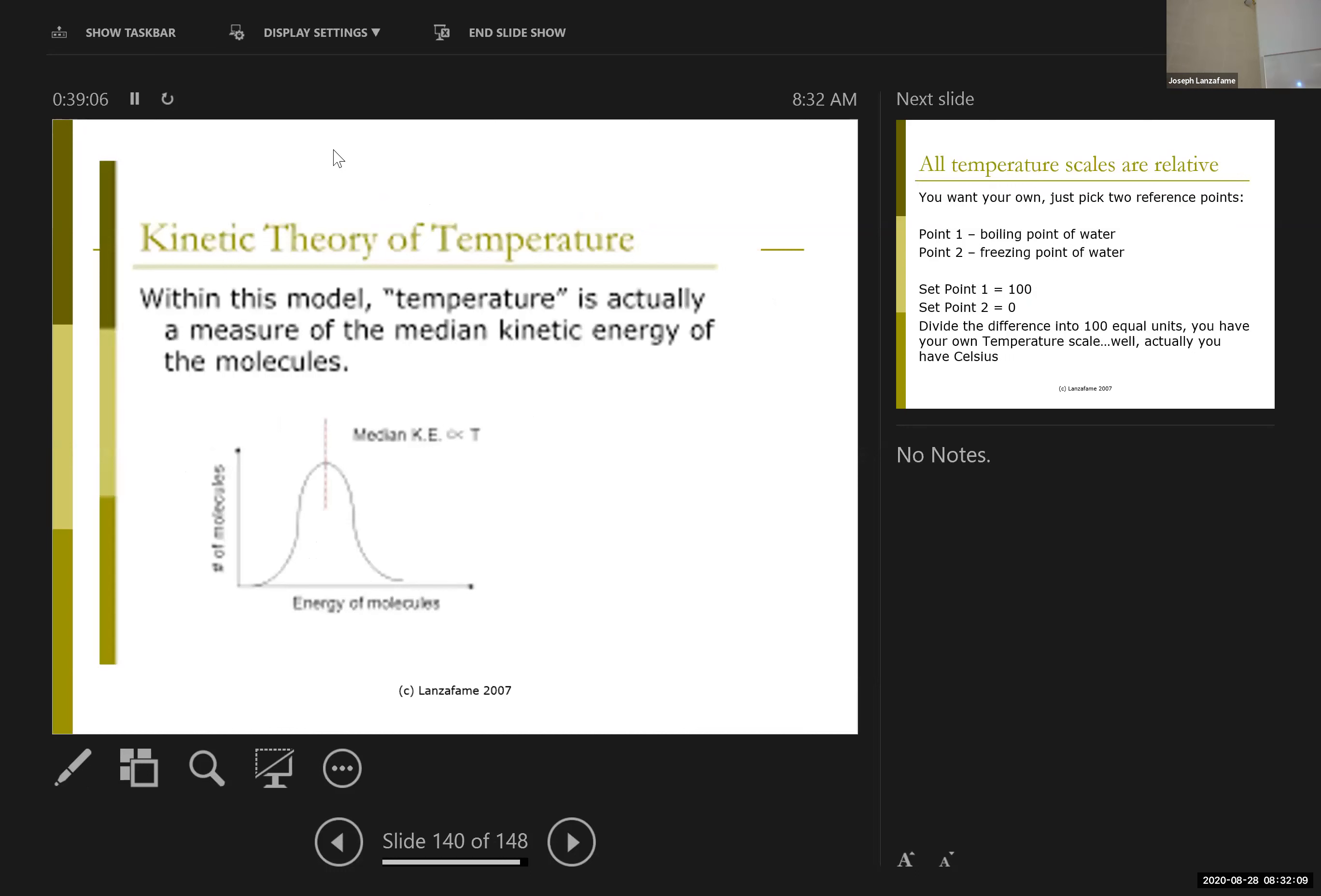We'll talk about this more when we talk about gases, but temperature is defined as the median kinetic energy of a system of molecules. Because, of course, not every molecule in a system has identical energies. There is a distribution. Some molecules are relatively hotter than other molecules, which are relatively colder. This is why water evaporates. There is some water molecules in your glass that have enough energy to be a gas.